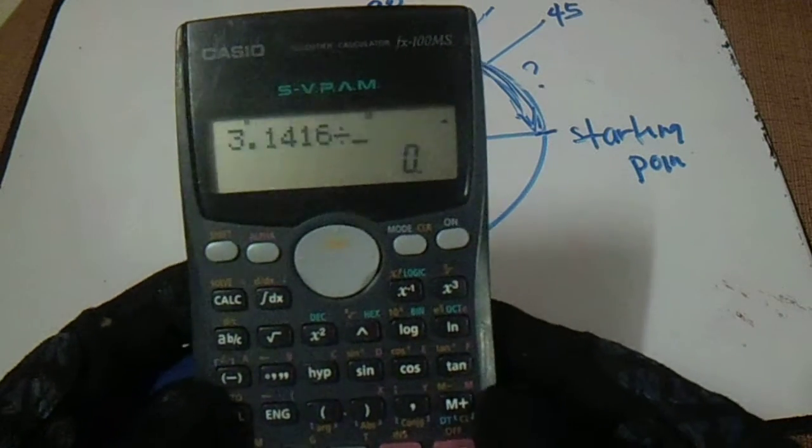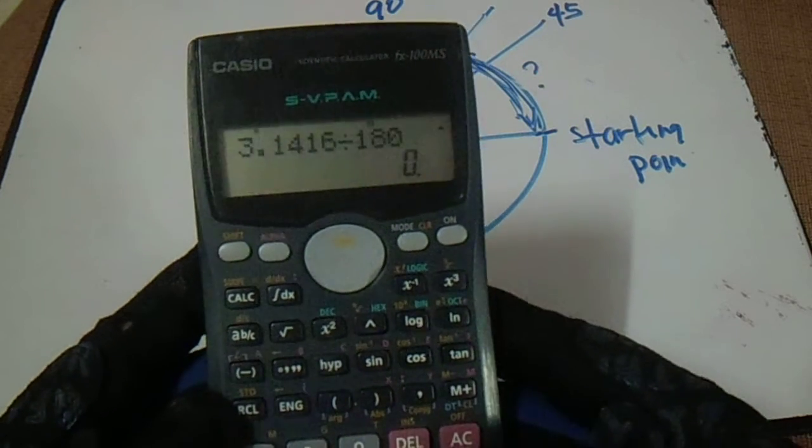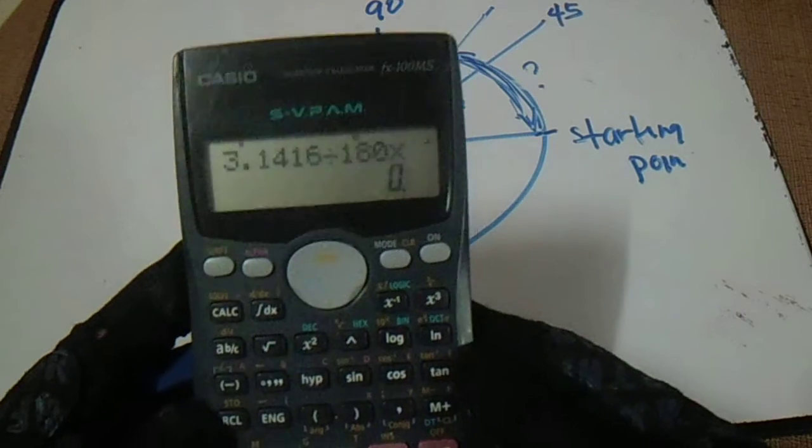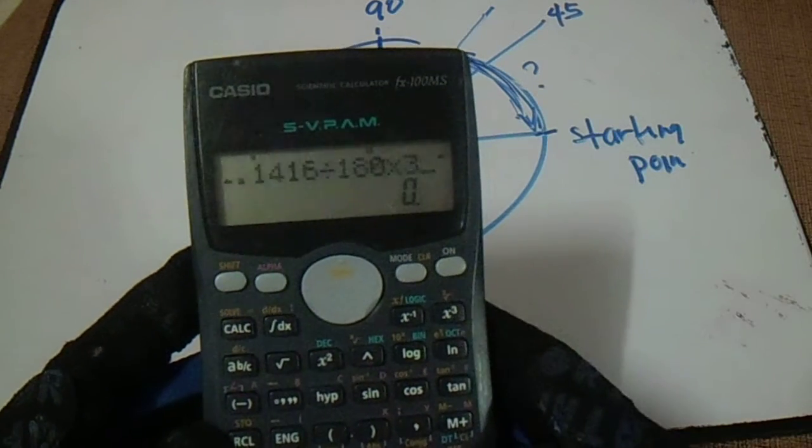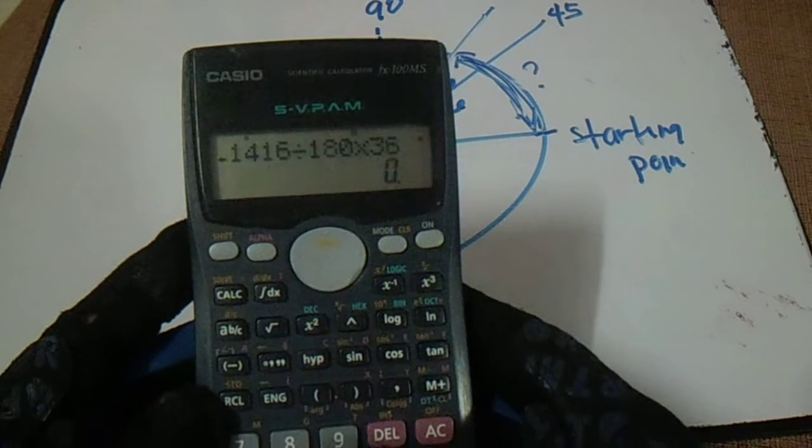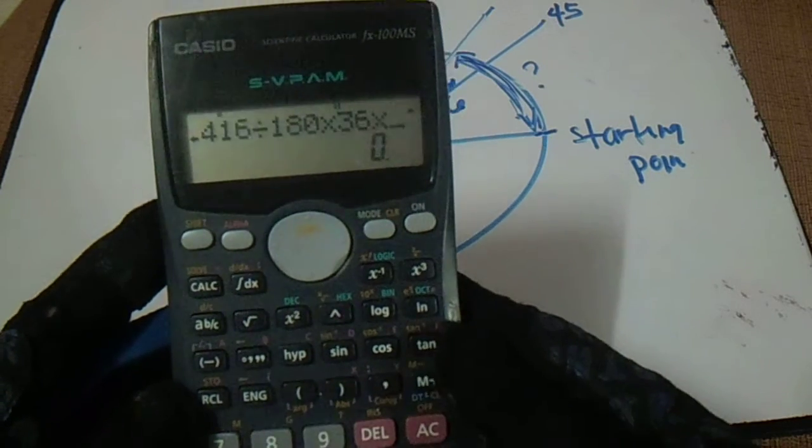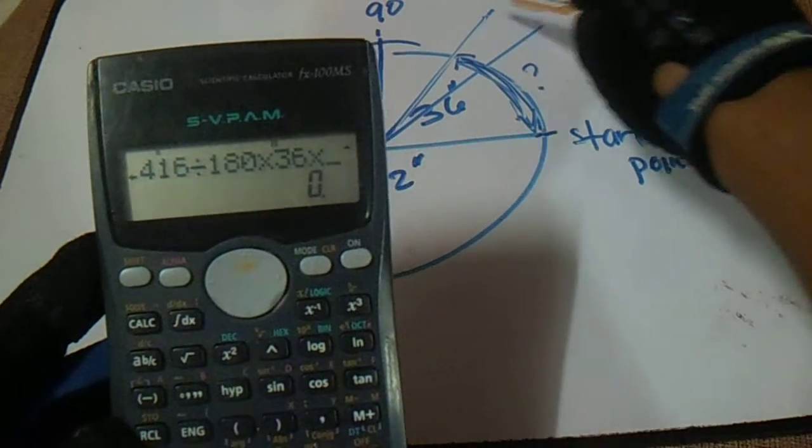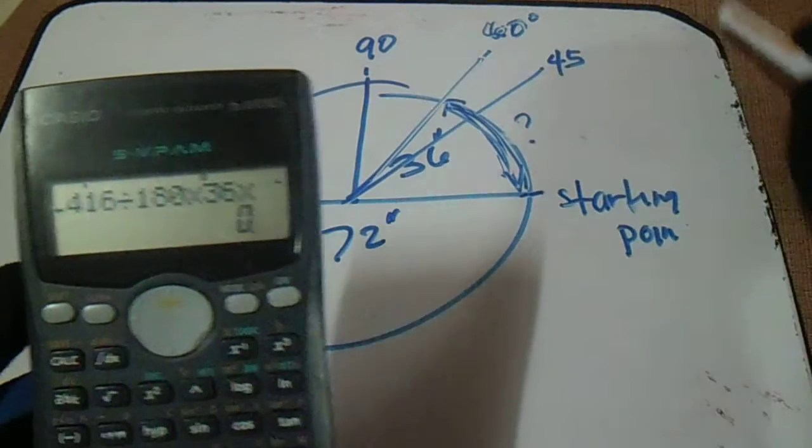divided by 180, multiply it to our radius which is 36, and multiply it to the given, which is 60 degrees.